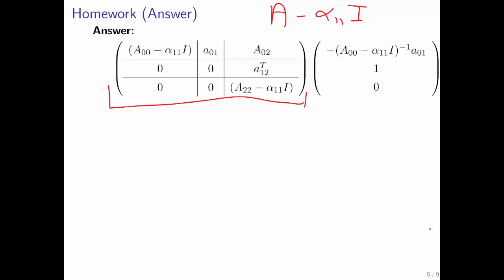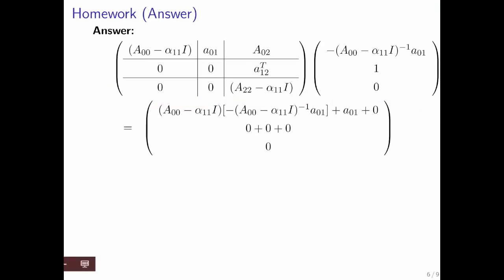What you would like to show is that this vector is in the null space. If you multiply all of this out, you get this right here. Notice that this is the inverse of that, so it disappears.